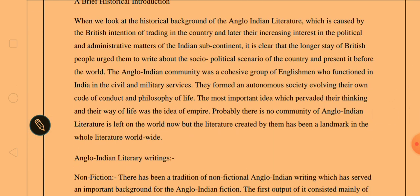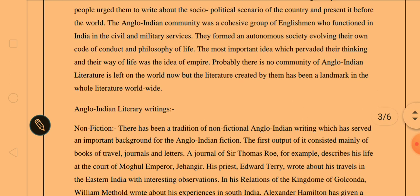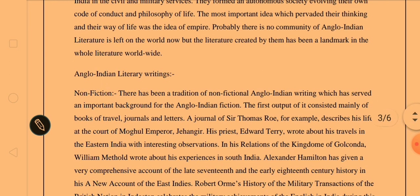When we go to the historical background, we know that when the British came to the country, it was their intention to have trade in India. But their increasing interest in political and administrative matters of the Indian subcontinent made them write about the socio-political scenario of the country. The Anglo-Indian community was a cohesive group of Englishmen who functioned in India in the civil and military services, forming an autonomous society with their own code of conduct. The most important idea pervading their thinking was the idea of empire.